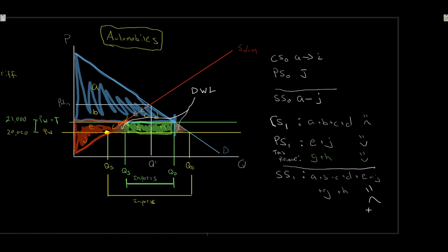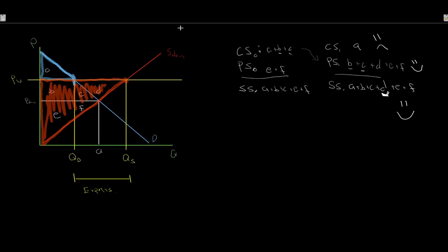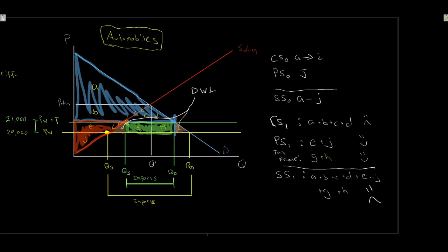Ideally you can work this out mathematically as well — everything is a triangle or rectangle. This is a more complex case with many shapes, and would be a significant question at the 103 level, but something to be comfortable doing. Feel comfortable working through it both mathematically and geometrically. We've seen that we have gains from trade, and that if we try to protect our import sector through tariffs and protectionism, we actually lose out a little — efficiency falls and we get deadweight loss.